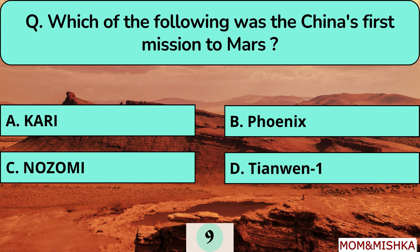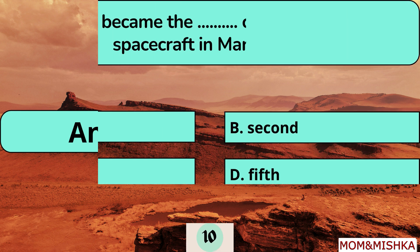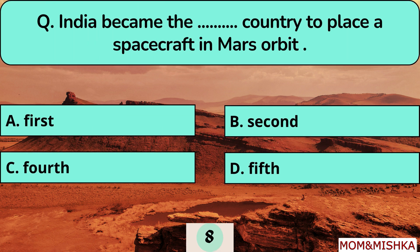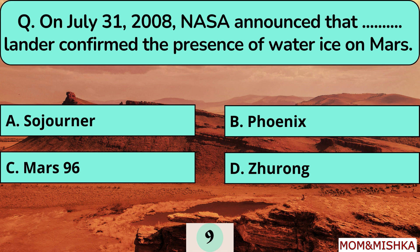China's first mission to Mars was Tianwen-1. India became the 4th country to place a spacecraft in Mars orbit, and the first country to do so in the first attempt. On July 31, 2008, NASA announced that the Phoenix lander confirmed the presence of water ice on Mars.